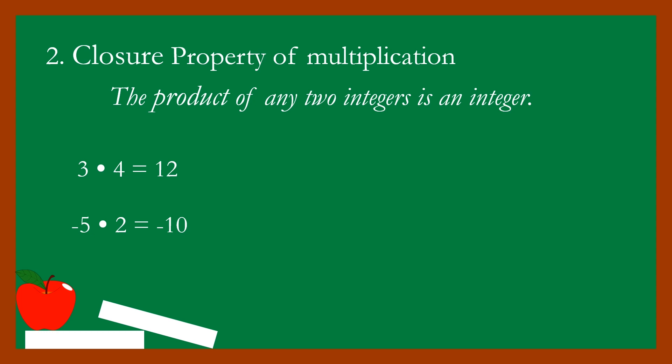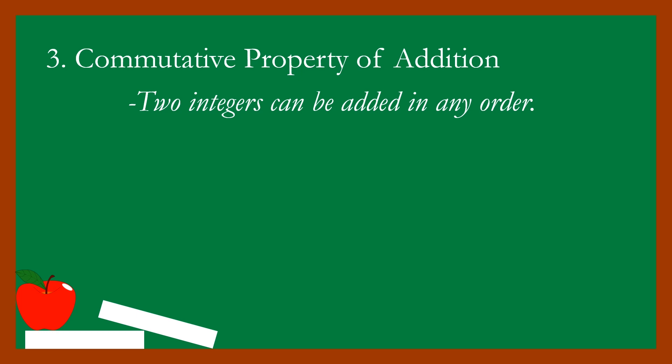Property number three: the commutative property of addition. Two integers can be added in any order. The notation for this property is a plus b is equal to b plus a. This means when we add two integers, we will have the same result even if the order of the two integers is reversed.